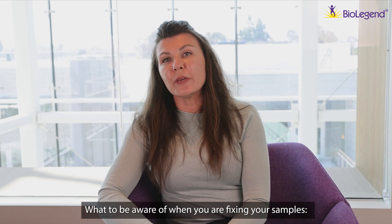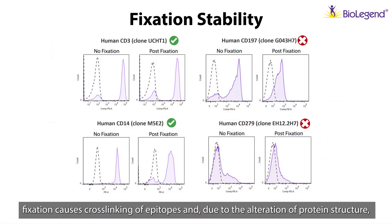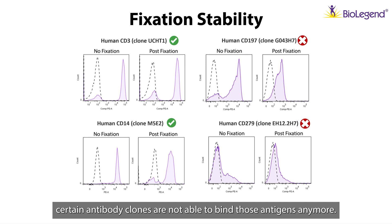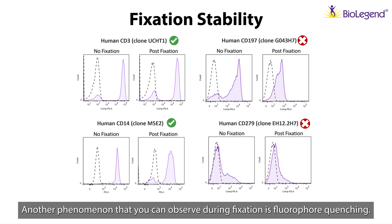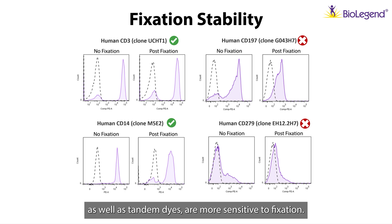What to be aware of when fixing your samples: fixation causes cross-linking of epitopes, and due to the alteration of protein structure, certain antibody clones may no longer be able to bind their antigens. Another phenomenon observed during fixation is fluorophore degradation — protein-based dyes as well as tandem dyes are known to be more sensitive to fixation.